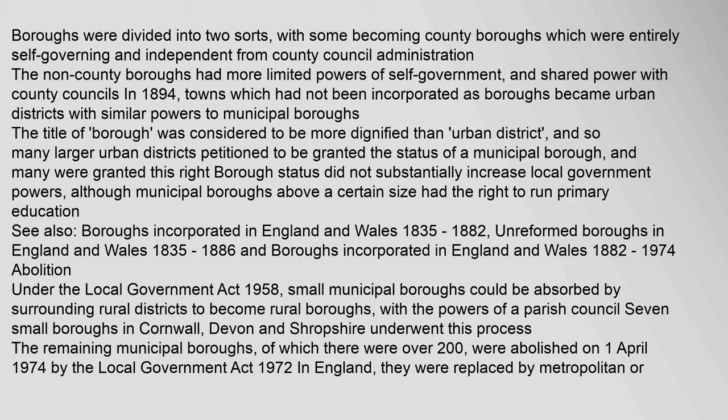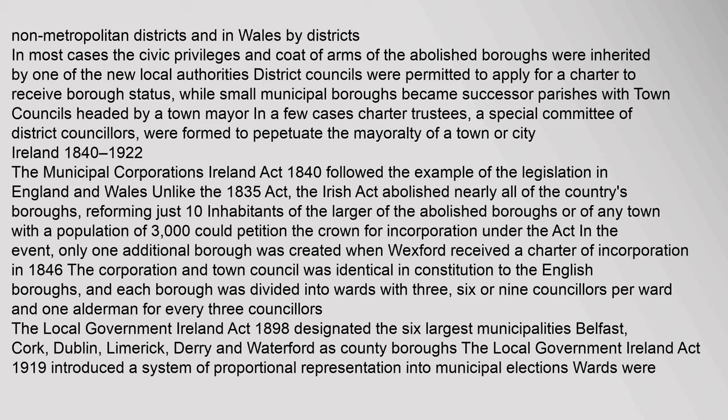Under the Local Government Act 1958, small municipal boroughs could be absorbed by surrounding rural districts to become rural boroughs with the powers of a parish council. Seven small boroughs in Cornwall, Devon and Shropshire underwent this process. The remaining municipal boroughs, of which there were over 200, were abolished on 1 April 1974 by the Local Government Act 1972. In England they were replaced by metropolitan or non-metropolitan districts, and in Wales by districts. In most cases the civic privileges and coat of arms of the abolished boroughs were inherited by one of the new local authorities. District councils were permitted to apply for a charter to receive borough status, while small municipal boroughs became successor parishes with town councils headed by a town mayor. In a few cases charter trustees, a special committee of district councillors, were formed to perpetuate the mayoralty of a town or city.